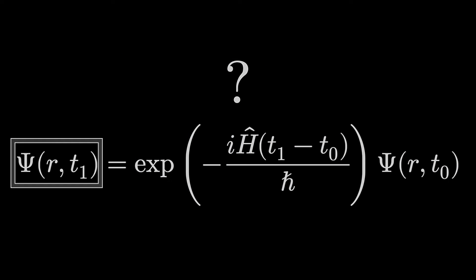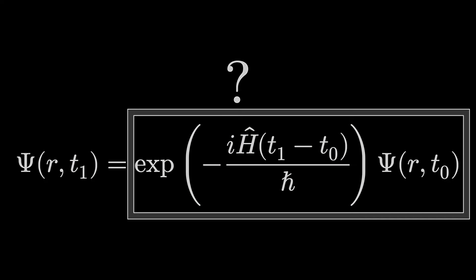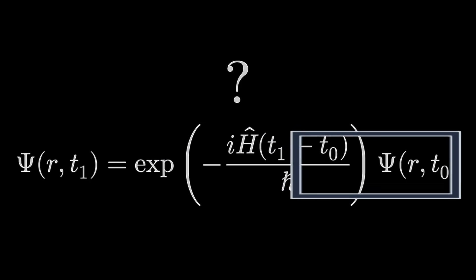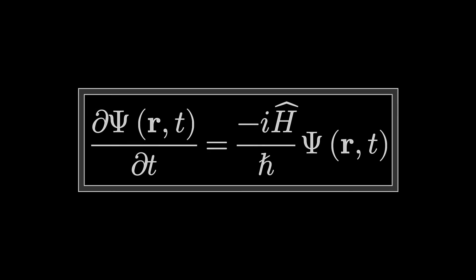Look at the expression a bit more carefully. We have, on the left-hand side, capital Ψ(r,t1), and this equals to a certain operator that we see multiplied by capital Ψ(r,t0). So we get capital Ψ(r,t1) from capital Ψ(r,t0), hence predicting the future of the quantum mechanical system.